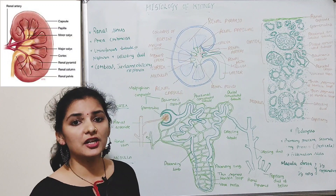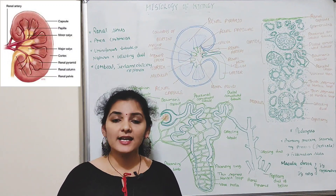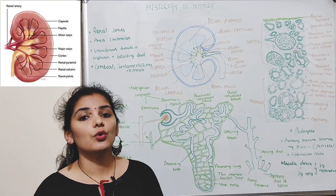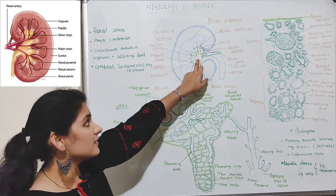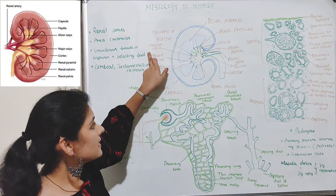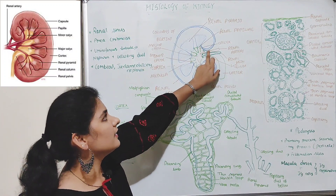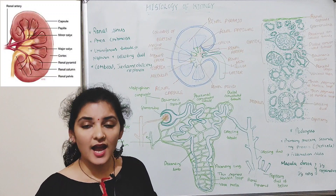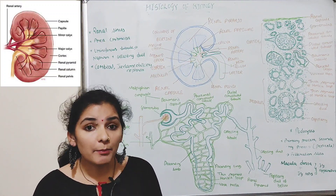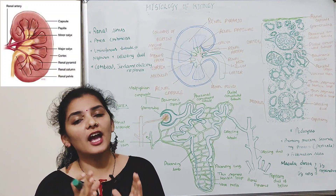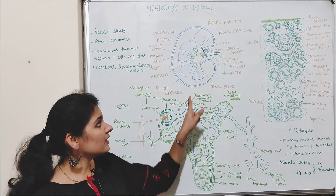The part of the kidney consisting of the minor calyx, major calyx, renal pelvis, and ureter is known as the renal sinuses. As the name indicates, sinus means a cavity — it is a cavity within the kidney consisting of the renal calyces, renal pelvis, ureter, and renal vessels. This sinus is cushioned by fat.